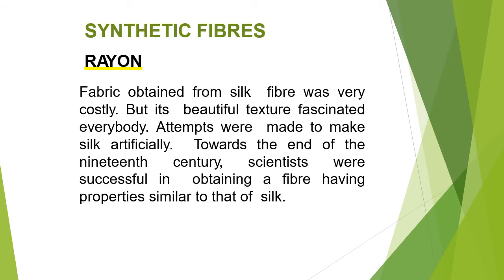The first synthetic fiber is rayon. This fabric looks like silk. As we know, silk is very attractive and liked by everyone, but it is quite expensive and not everyone can afford it. Keeping this in mind, scientists tried to make a fiber that looks like silk but is cheaper. By the end of the 19th century they succeeded, producing a fiber called rayon, which looks like silk and has similar properties.